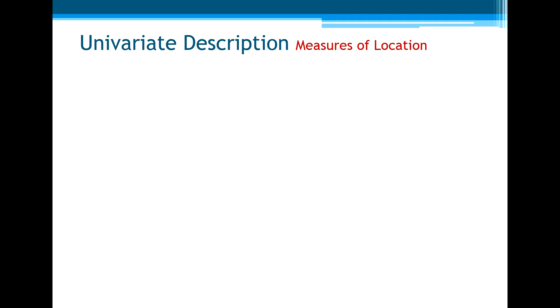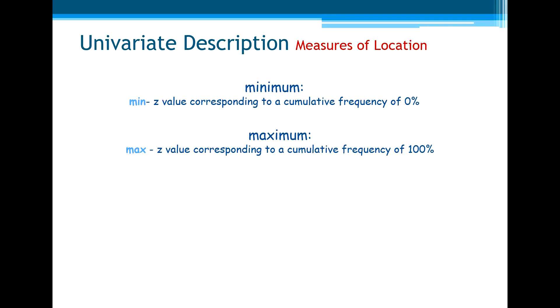Now, let's see the other measures of location: the minimum value of a set of values, the maximum values correspond to a cumulative frequency of 100%, and also the quantiles. The quantiles means that it's exactly the z value corresponding to a cumulative frequency of p%.